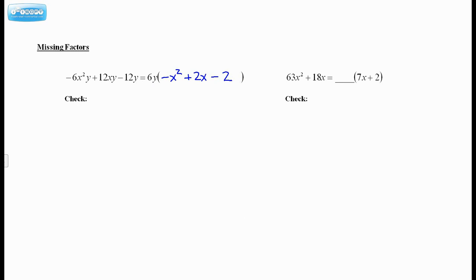And it does say check, even though I already know it's right. But I'll show the check anyway. Draw our favorite arrows. So I get negative 6x²y + 12xy - 12y. Which is exactly what we started with.